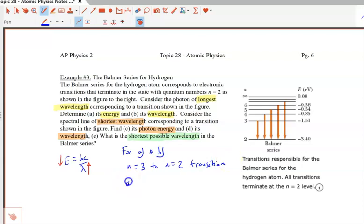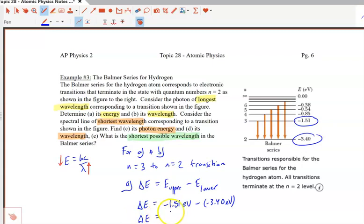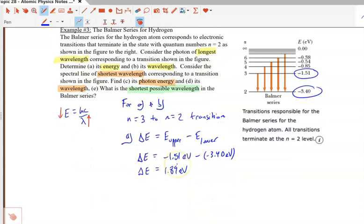So for part A, let's find that energy. That change in energy is really the difference of the energy. So the energy at the upper transition minus E at the lower transition. So that change in energy would be, at 3, it is negative 1.51 electron volts, and at the lower one, it is negative 3.40 electron volts. So that's going to give us an energy change of 1.89 electron volts. I could probably write this in joules, but I think that's fine just to leave in electron volts.